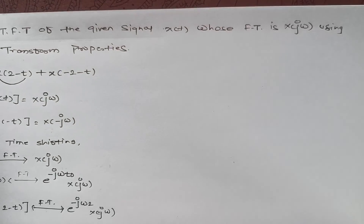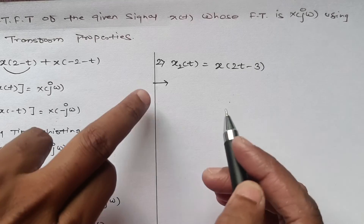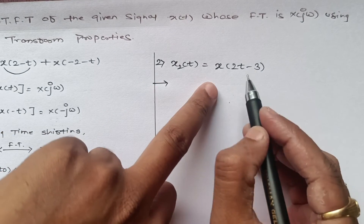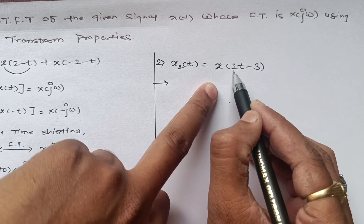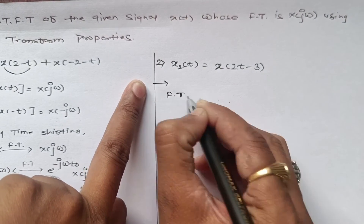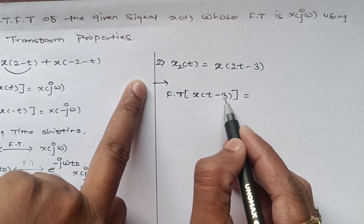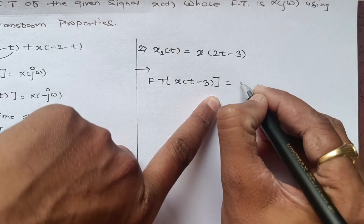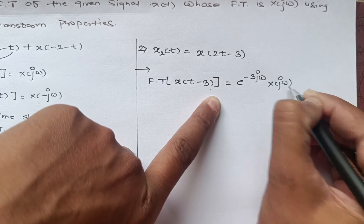Now let us look at the second example: x2(t) = x(2t - 3). We first find the Fourier transform of x(t - 3). Since x(t) is shifted by 3 units, we use the time shifting property, giving e^(-3jω)·X(jω).